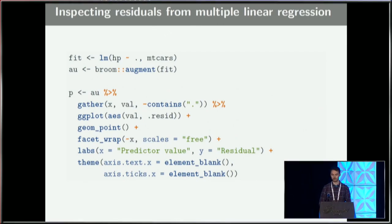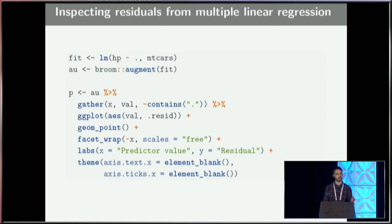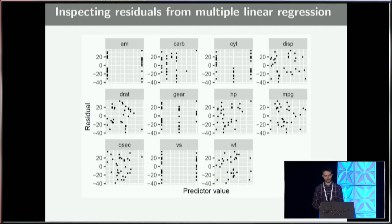By far my favorite use case for Broom is checking multiple linear regression. When you use augment you get the residuals, and one thing you might want to do is compare residuals to each of your predictors — partial residual plots — to look for systematic deviations that might indicate model misfit. With about ten lines of code I can do a visual check for model misfit. Looking at the residuals, I wouldn't be too concerned in this case, but it's a nice way to do quick and easy diagnostics.